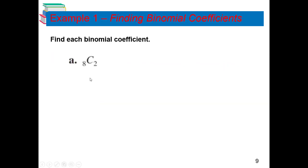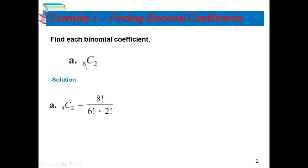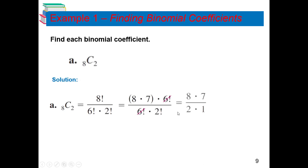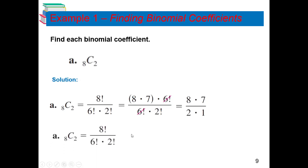Another example: 10C3, where n = 10 and r = 3. So we have 10! / (7! · 3!). Expanding: (10 × 9 × 8 × 7!) / (7! · 3!). The 7! cancels out, leaving (10 × 9 × 8) / (3 × 2 × 1). The answer is 120.